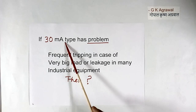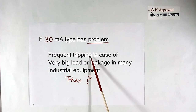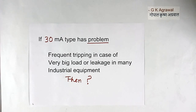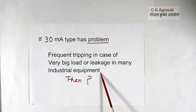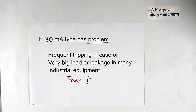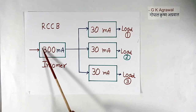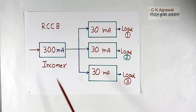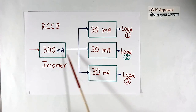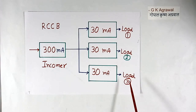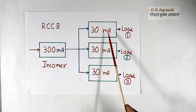Now suppose a 30 mA type RCCB has a problem of frequent tripping. We are not touching any electrical wire, no leakage current is flowing in our body, still it is tripping. This is because of leakage in many industrial equipment, or in the case of very big loads where there may be leakage and it may trip. Then what to do? Then we use a 300 mA type RCCB. But in this case, this RCCB will not give protection to humans — it will not protect us from electrical shock. So what we do is use the 300 mA at the incoming, then divide the loads, and for every small load we provide one 30 mA type RCCB.